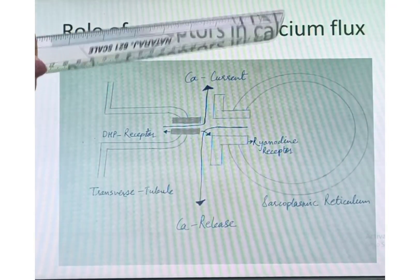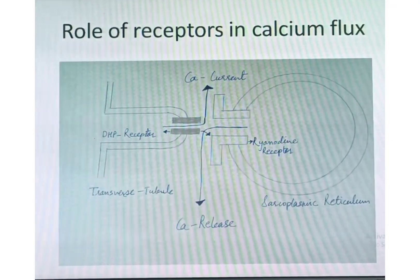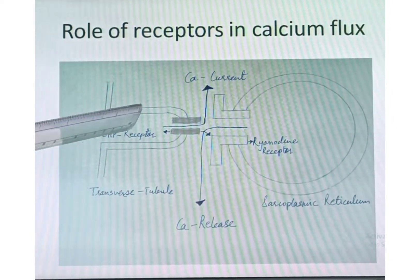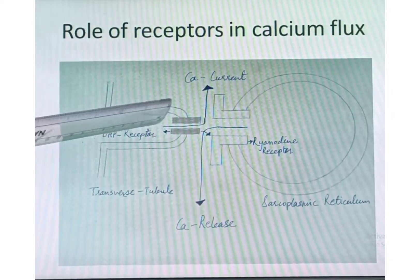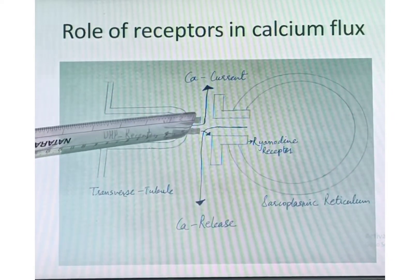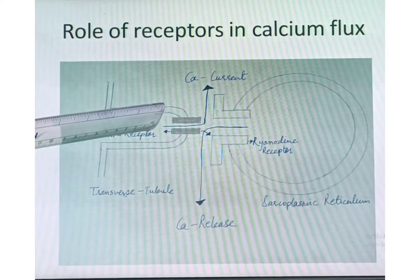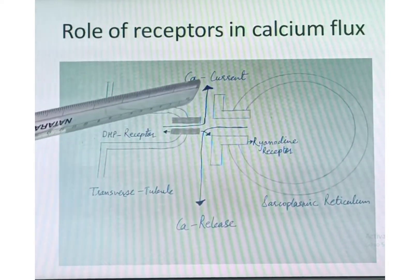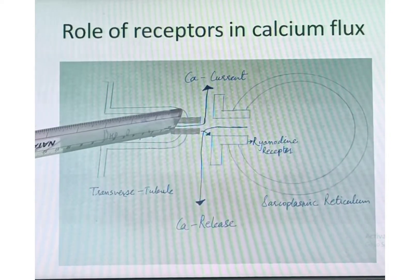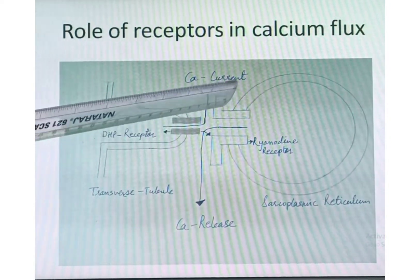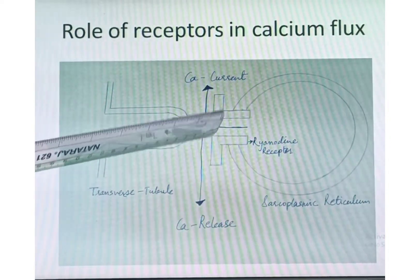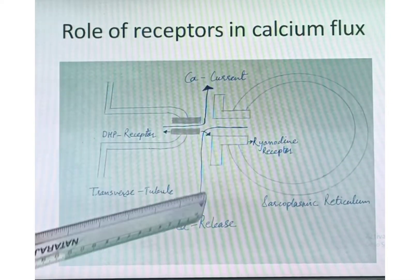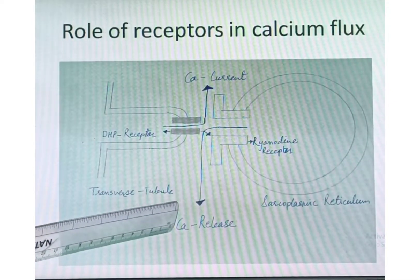Regarding the role of these receptors in calcium flux: as soon as an action potential arrives into the T-tubule, it gets transmitted deep into the T-tubule, and there is opening of the voltage-gated channels present on the dihydropyridine receptor. As a result, a conformational change occurs on the ryanodine receptor, resulting in the release of calcium.